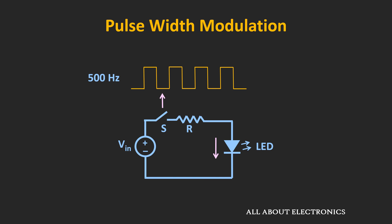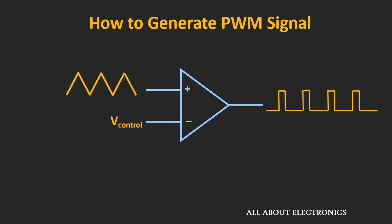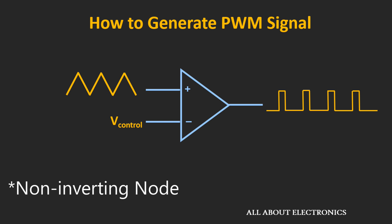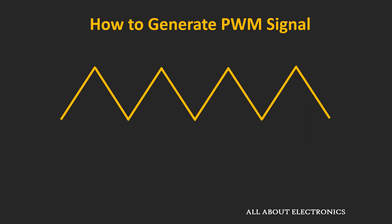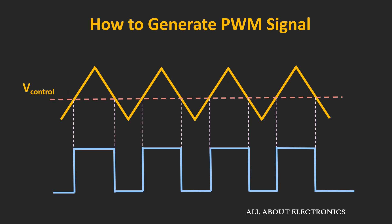Now let's see how we can generate this PWM output signal. A simple way of generating this PWM signal is using a comparator circuit. Here, the triangular wave is applied at the inverting node while the control voltage is applied at the non-inverting node. Whenever the triangular wave voltage is less than the control voltage, the output of the comparator will be low. Whenever the triangular wave voltage goes above the control voltage, the output becomes high. Depending upon the value of this control voltage, the width of the pulse can be changed. If we reduce the control voltage, the width of the output pulse will increase. By controlling this control voltage, it is possible to change the pulse width of the output waveform.